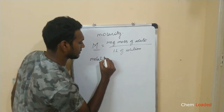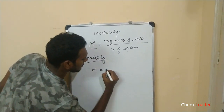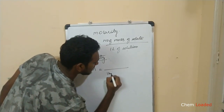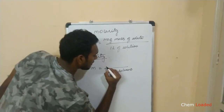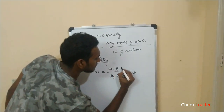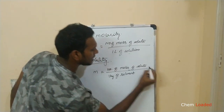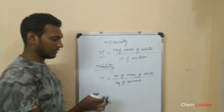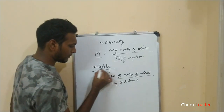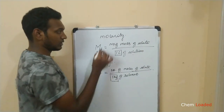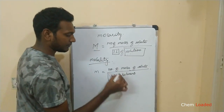Molality is defined as the number of moles of solute per 1 kg of solvent. So molarity uses 1 liter of solution, while molality uses 1 kg of solvent.